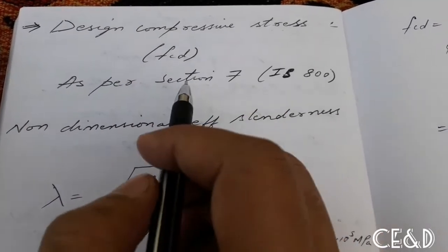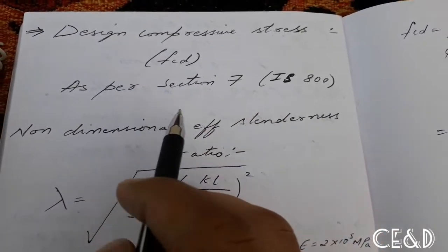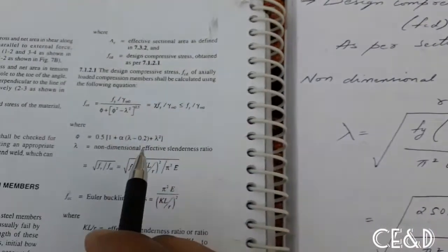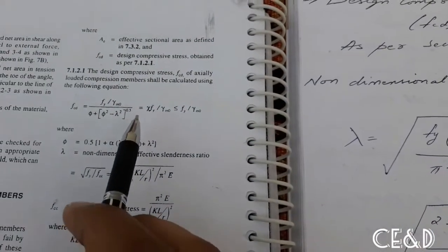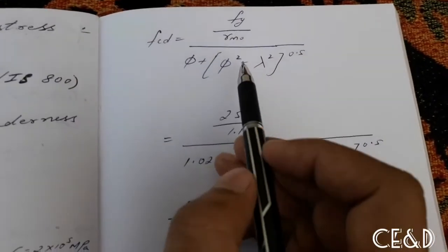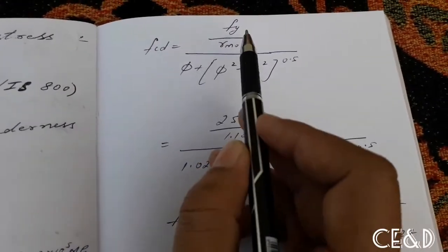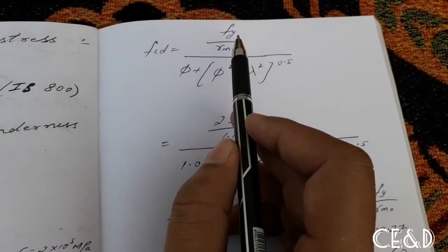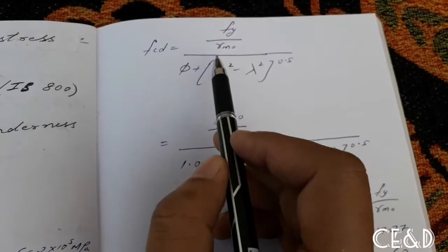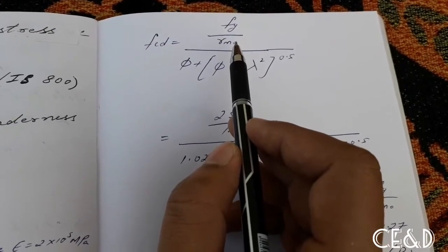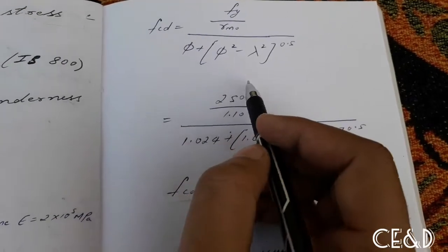Find design compressive stress FCD as per section 7 of IS 800. In the FCD formula, FY = 250 N/mm² is known, gamma_M0 = 1.10 is constant, and phi and lambda are unknown. First find lambda, then substitute to find phi, then calculate FCD.